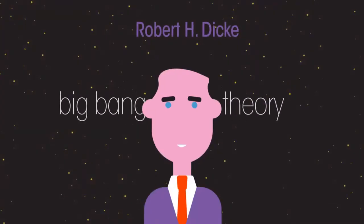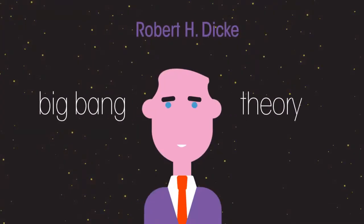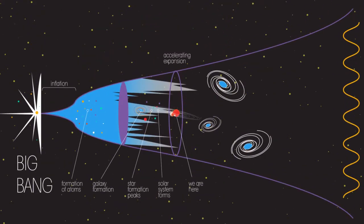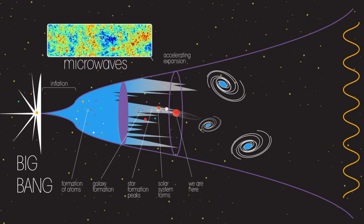Around the same time, Robert Dickey was investigating something called the Big Bang Theory. He thought that if this theory for the origin of the universe was correct, the whole universe should still have some microwaves present.